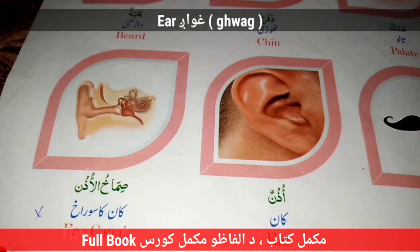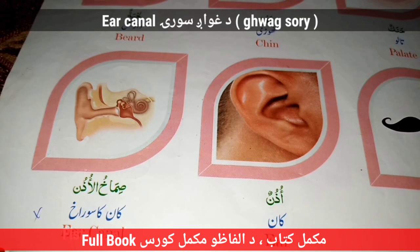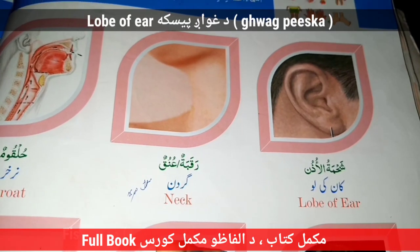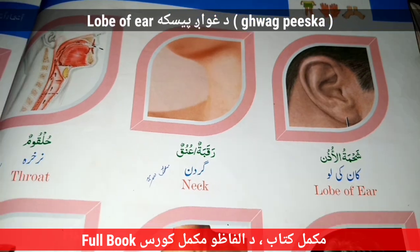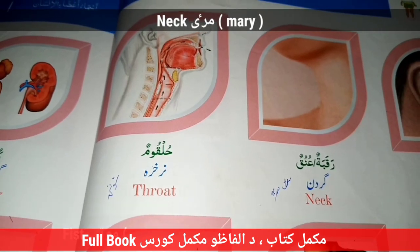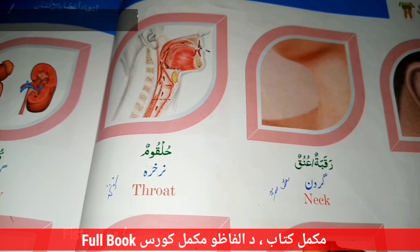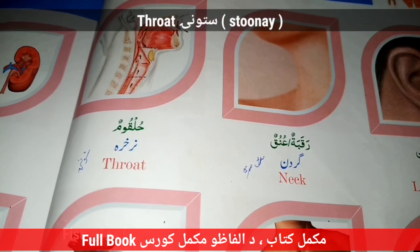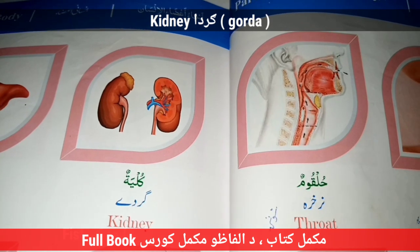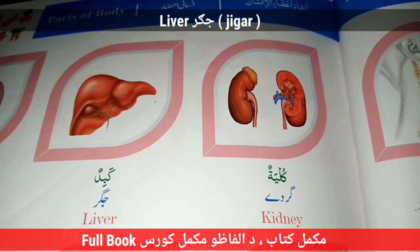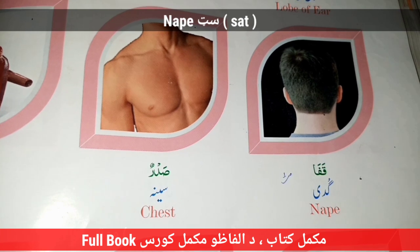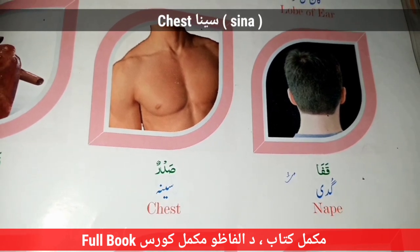Ear — Gwag. Ear Canal — Dugwag — Suray. Lobe of Ear — Dugwag Pisgah. Neck — Maray. Throat — Dhan Maray. Kidney — Gurday. Liver — Jigar. Nape — Sert. Chest — Sina.